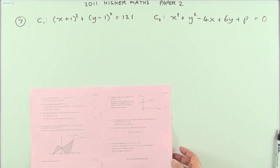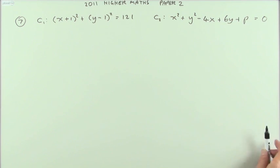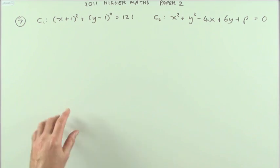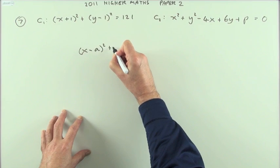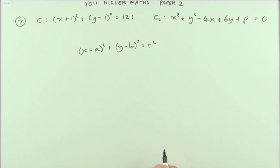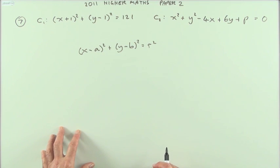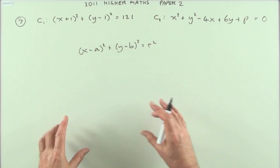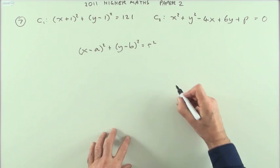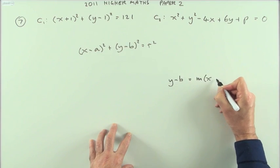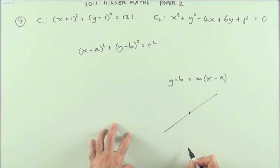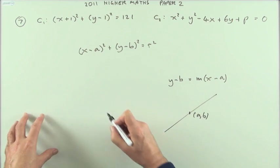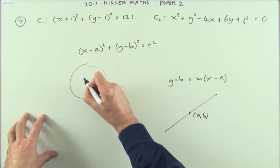Before anything else, get the geometrical information: what's the center, what's the radius. In the form (x − a)² + (y − b)² = r², a and b are the coordinates of the center and r is the radius — just like any transformed equation. Same idea as a line y − b = m(x − a) where (a, b) gives a point on the line; with a circle, (a, b) gives the center.